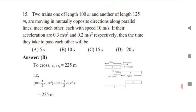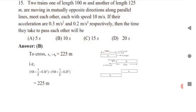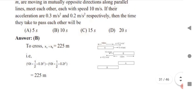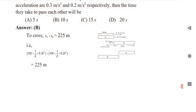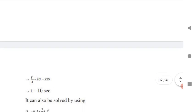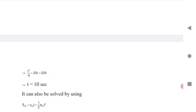Next: two trains of lengths 100 meters and 125 meters are moving in mutually opposite directions along parallel lines, each at 10 m/s. Given their acceleration, find the time taken to pass each other. First calculate total length xA + xB = 225 meters. Apply s = ut + ½at² with the combined displacement of 225 meters; substitute to find time. Use v = u + at or s = ut + ½at² to get the final answer.